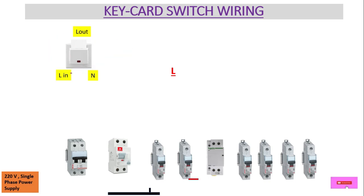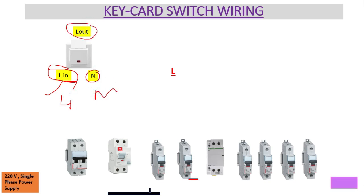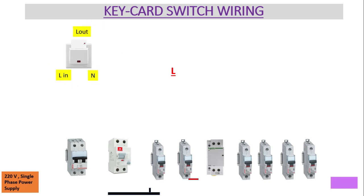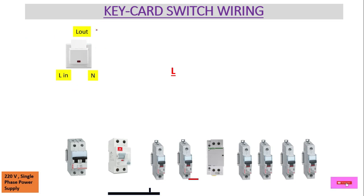Here we have the key card switch, as you can see. It has three terminals: L-IN where the phase or live wire is connected, N for neutral, and L-OUT which is the output from the key card switch. When we insert the key card it provides power to the L-OUT terminal; when we remove the card there is no power at the L-OUT terminal.